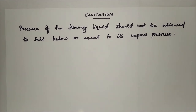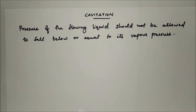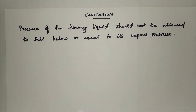In reaction turbines, cavitation occurs at the outlet of the runner or at the inlet of the draft tube, where the pressure is considerably reduced. Due to cavitation, the metal of the runner and draft tube is gradually eaten away, which results in lowering the efficiency of the turbine. There will be a sudden drop in efficiency due to cavitation in case of reaction turbines.